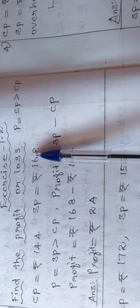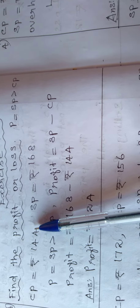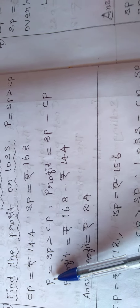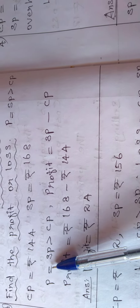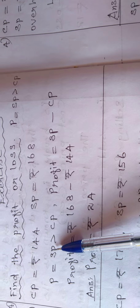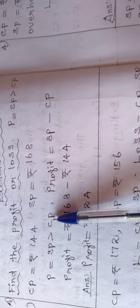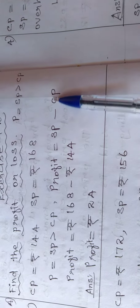SP is rupees 168. Which is greater? SP is greater than CP. If SP is greater than CP, it is a profit. Profit is equal to SP minus CP, so we have to subtract CP from SP.